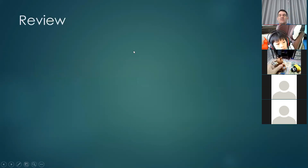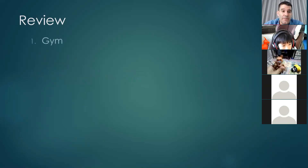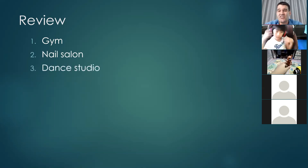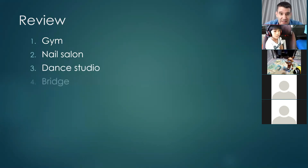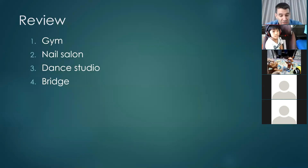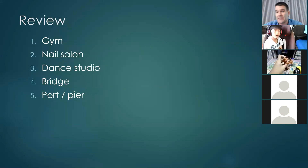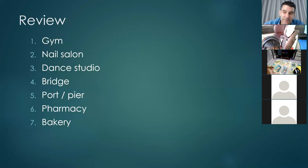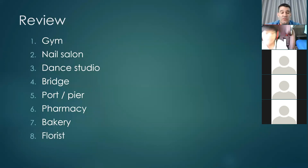Let's quickly review the new words: gym — a place to exercise; nail salon — where you get your nails painted; dance studio — where you go to learn or practice dancing; bridge — where you drive a car, motorcycle, or train over water; port — for big boats; pier — for small boats; pharmacy or drugstore — where you buy medicine; bakery — where people bake things for you to buy; and florist — where you buy flowers.